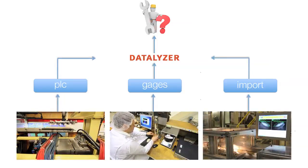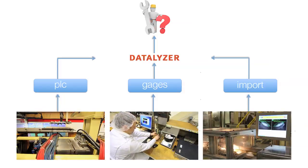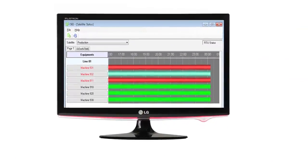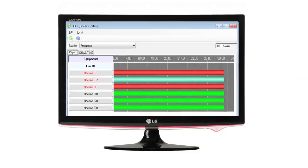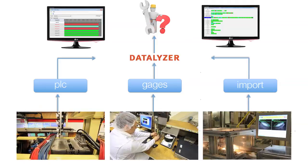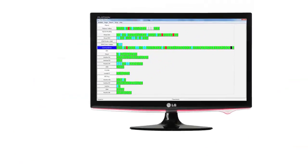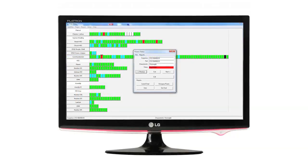All information comes together in a central database and that information is instantly available for everyone in the company. People can view the dashboard to see how the processes are running. The dashboard indicates different alarms like machine breakdowns, defects found and out of controls on critical characteristics. From the dashboard, people can drill down and check relevant information.